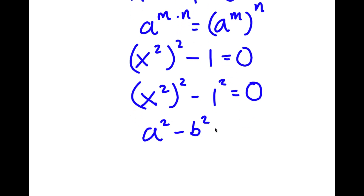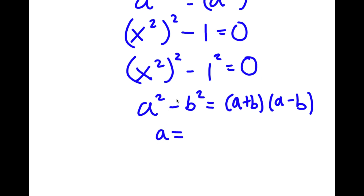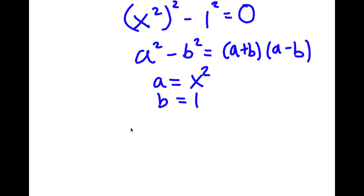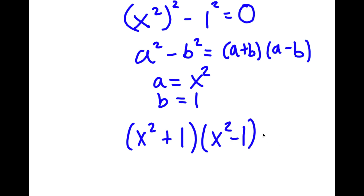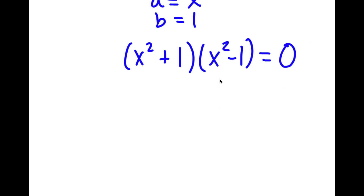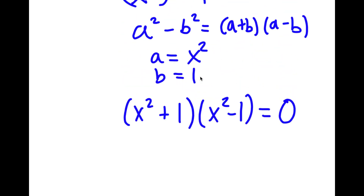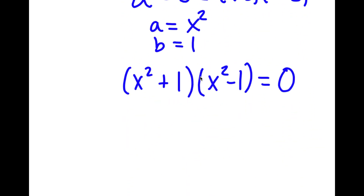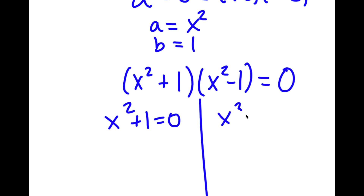If I have something in the form a squared minus b squared, this is equal to a plus b times a minus b. So in this case, a is x squared and b is 1. So I have x squared plus 1 times x squared minus 1, and this is equal to 0. This gives me two equations: x squared plus 1 is equal to 0, and x squared minus 1 is equal to 0.